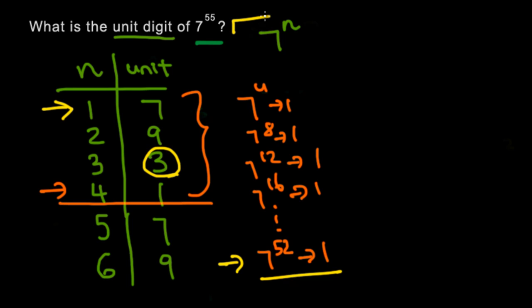So we know that the answer for this is going to be 3. A more formal way of thinking of this problem would be instead of showing all this, we just simply divide 55 by 4. And that 4 comes from the fact that the unit digit repeats every 4 numbers.